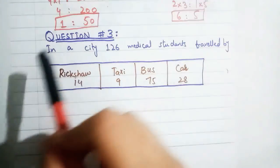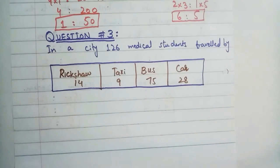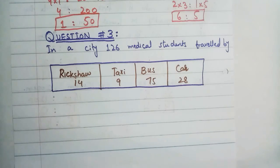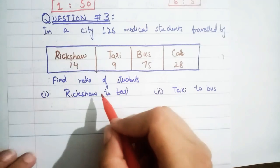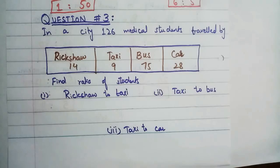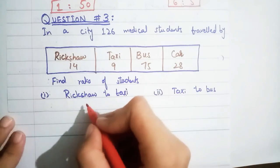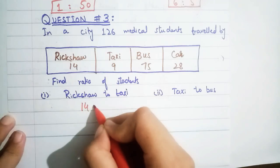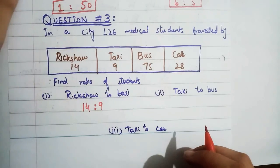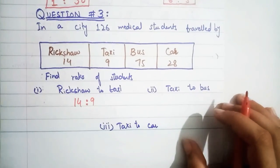Question number three: there are 126 medical students who travel to university by different means. 14 go by rickshaw, 9 by taxi, 75 by bus, and 28 by car. Find the ratio in each case. Rickshaw to taxi: 14 : 9. This is already in simplest form since it cannot be simplified further.